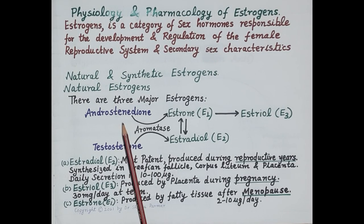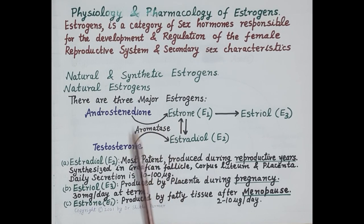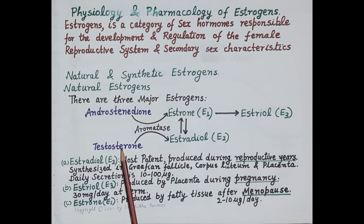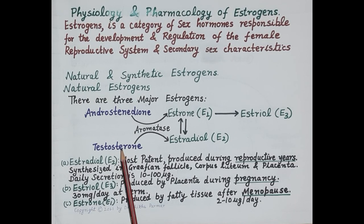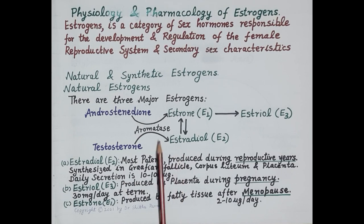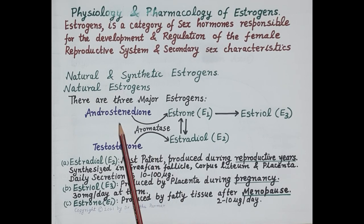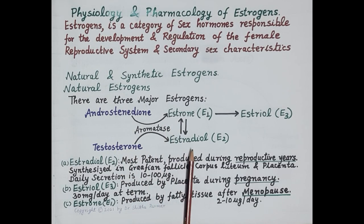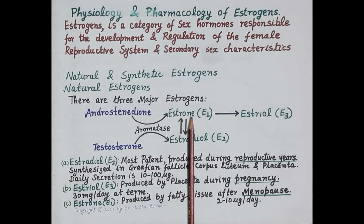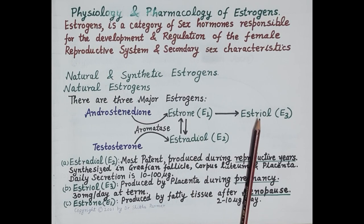Androstenedione is a weak androgenic steroid and is a precursor of estrone, while testosterone is the principal androgen in the body and is a precursor of estradiol. The aromatase enzyme converts androstenedione to estrone and testosterone to estradiol. This estradiol is rapidly oxidized in the liver to estrone, and estrone is further hydroxylated to estriol.